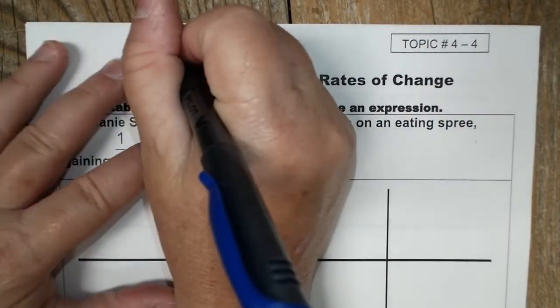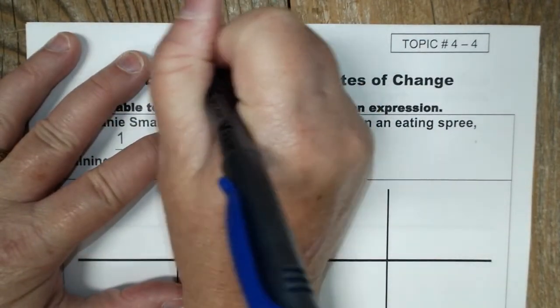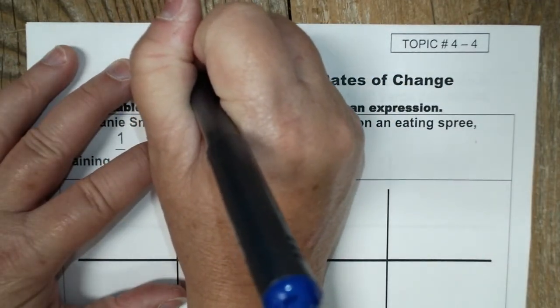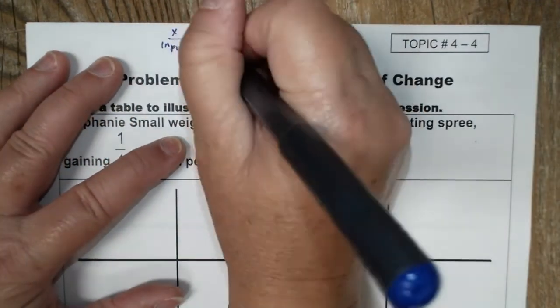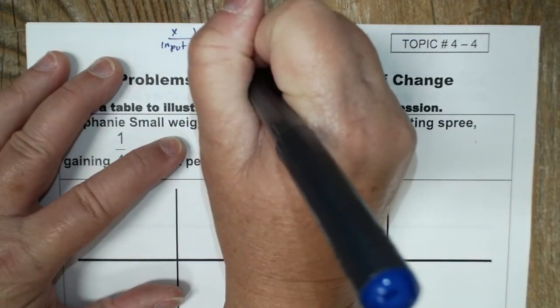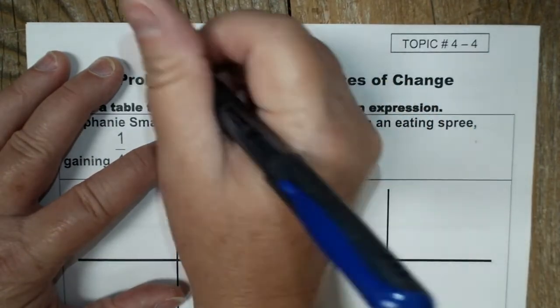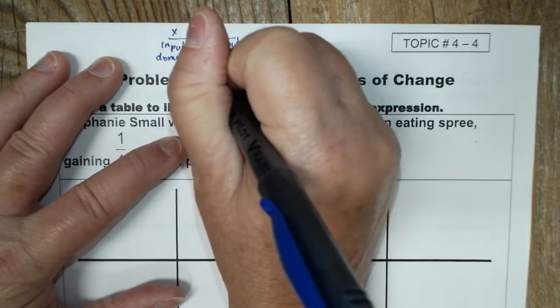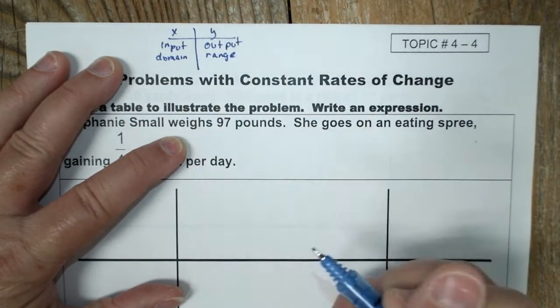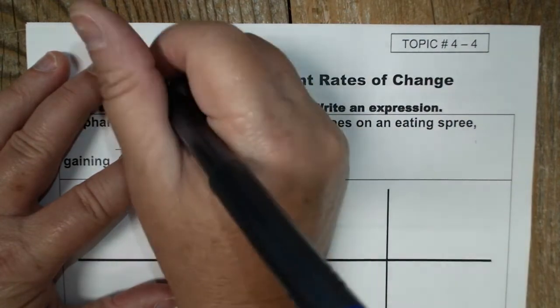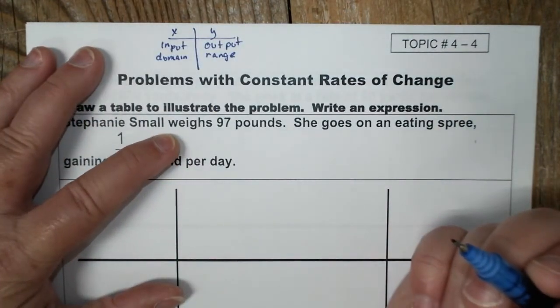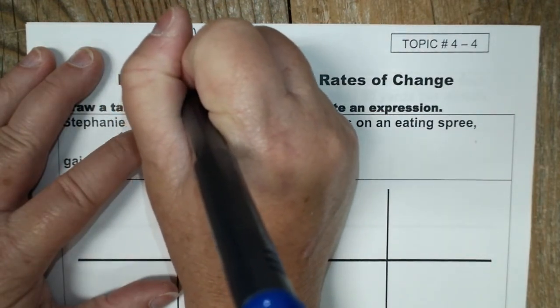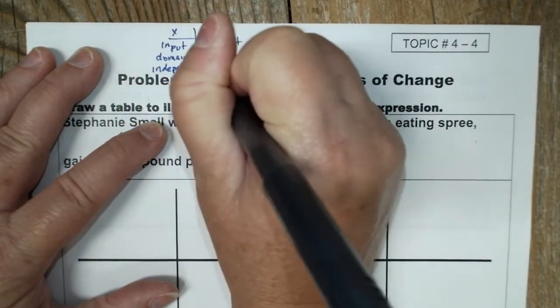I'm going to make some notes up here. X, Y. So we know that X is the input and Y is the output. We also know that X can be the domain and Y is the range.